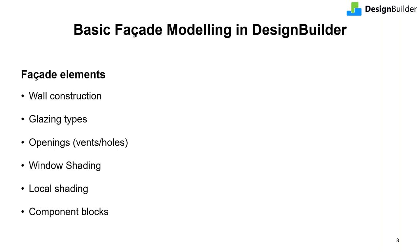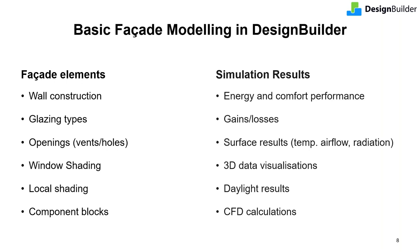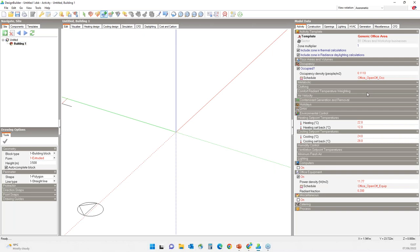Basic facade modeling in DesignBuilder requires setup of various facade elements such as walls, glazing, and different types of shading, and then running EnergyPlus thermal simulations to generate typical results to assess facade performance. Additionally, further analysis such as daylighting and CFD can be done for a holistic facade assessment. This is a topic-focused webinar; I'm assuming most of you are familiar with DesignBuilder basics. For those who are new, I'd like to show you the free tutorials on DesignBuilder's website where you can learn more about the software.